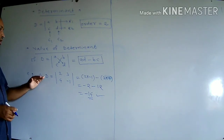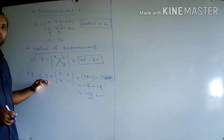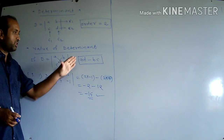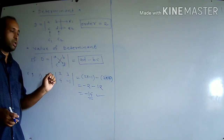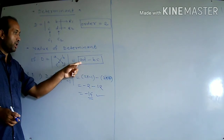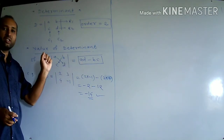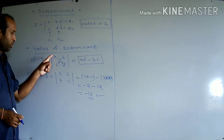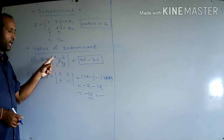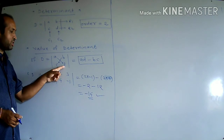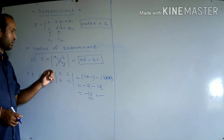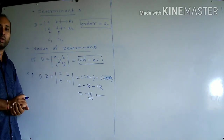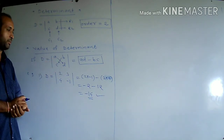Only remember this simple formula: A·D minus B·C — that is, the product of diagonal elements minus the product of non-diagonal elements.